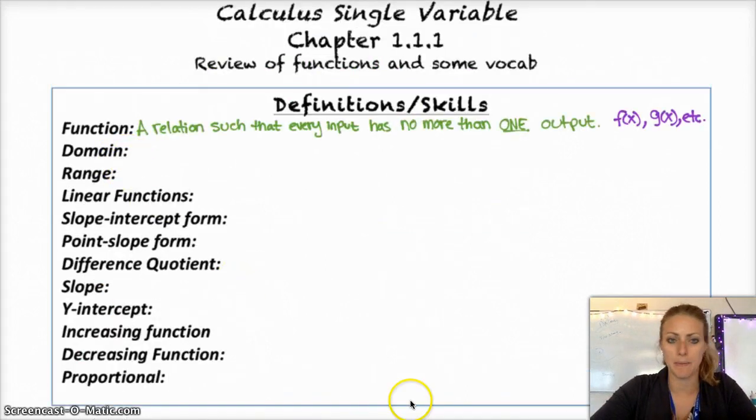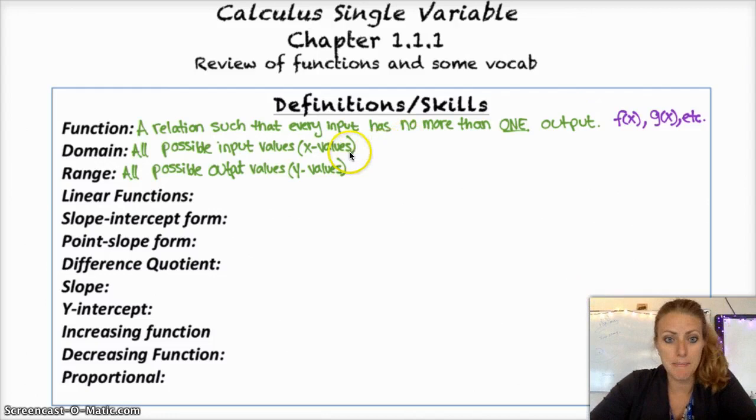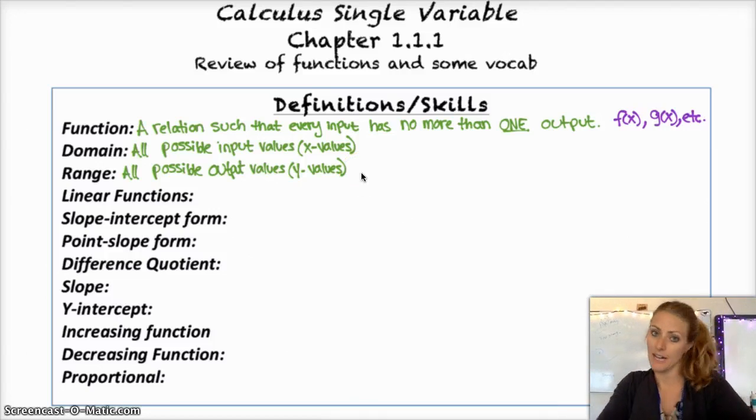Domain and range. Domain is the set of all input values for a function, and the range is the set of all outputs. For domain, you're looking at all of the possible X values that would exist on the function, and then your range is all your possible Y values. We have a lot of word problems and different types of real application problems. Sometimes you might have a function that has a domain of negative infinity to infinity, but depending on the context, you might have a more practical domain and range.